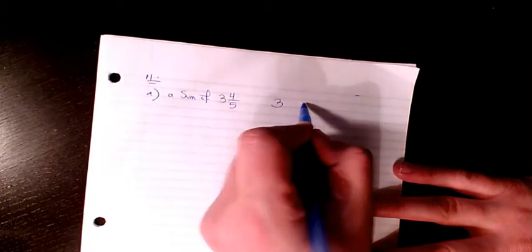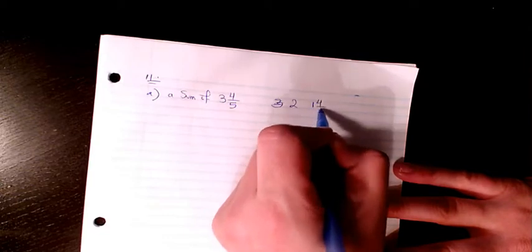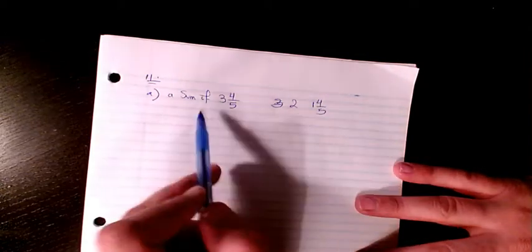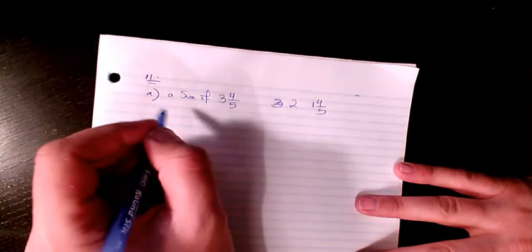So I can say three and, or two and one, four over five. When we add them it will give you three and four over five.